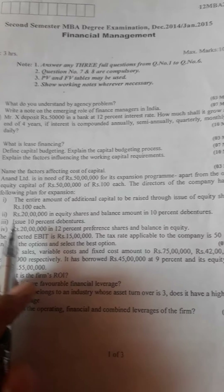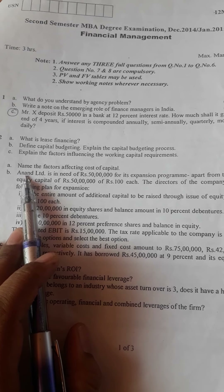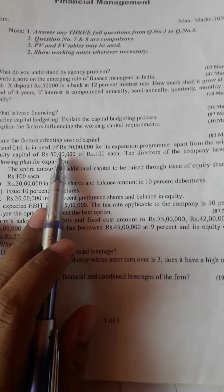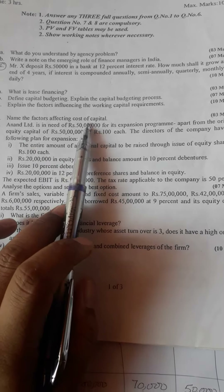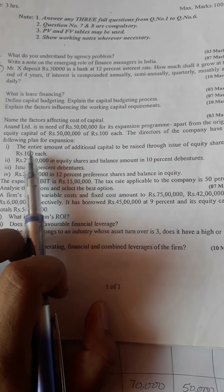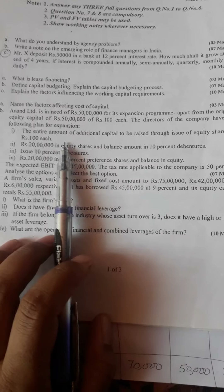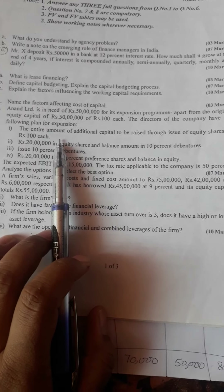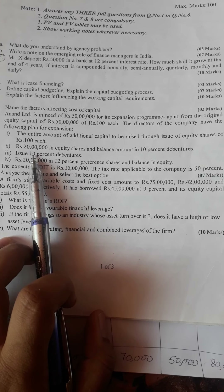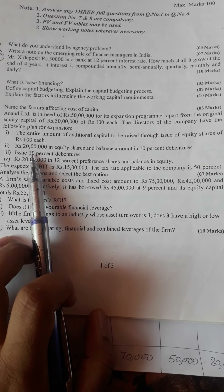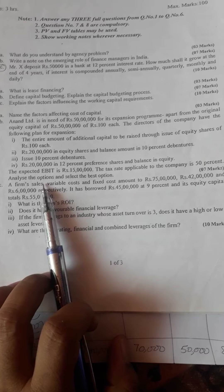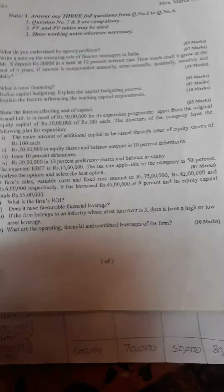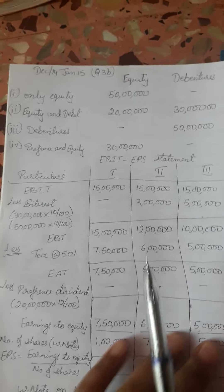Today we will do problems on EBIT-EPS analysis. Anand Limited is in need of rupees 50 lakh for its expansion program, apart from the original equity capital of 50 lakh of rupees 100 each. The directors have four plans: plan one, entire additional capital through equity shares of rupees 100 each; plan two, 20 lakh in equity and balance in 10% debentures; plan three, issue of 10% debentures; plan four, 20 lakh in 12% preference shares and balance in equity. Expected EBIT is 15 lakh, tax rate is 50%.